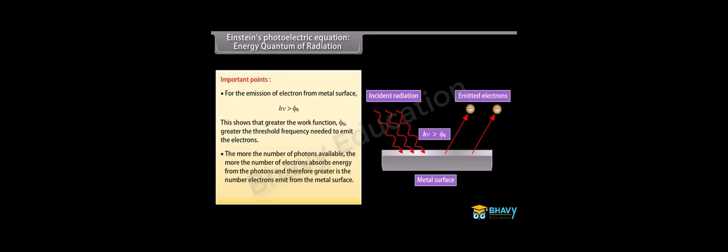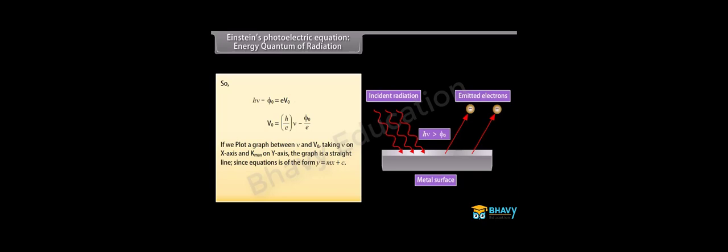Important points: For electron emission from the metal surface, hν must be greater than phi-zero. This shows that greater the work function phi-zero, greater the threshold frequency needed to emit electrons. The more the number of photons, the more electrons absorb energy and the greater the number emitted. Since Kmax equals eV0 and Kmax equals hν minus phi-zero, we get hν minus phi-zero equals eV0, so V0 equals (h/e)ν minus phi-zero/e. A graph of ν versus V0 is a straight line of the form y equals mx plus c, where the slope m equals h/e, a universal constant.